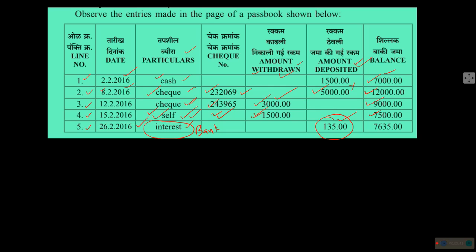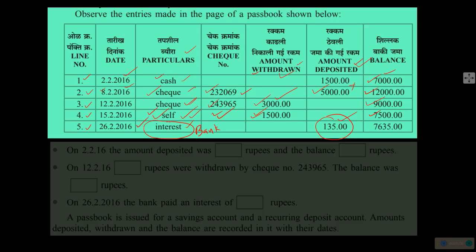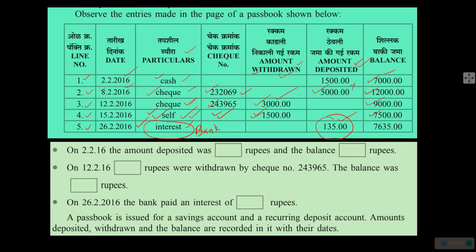The topic is Banks and Simple Interest. You have come across the concept of interest in previous years and have a basic idea about how interest functions. It is money paid by the bank as a percentage per year to the customer because the customer keeps money in the bank. Looking at the given passbook: on 2nd February 2016, the amount deposited was rupees 1,500 and the balance was rupees 7,000.